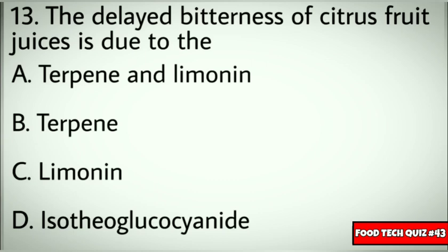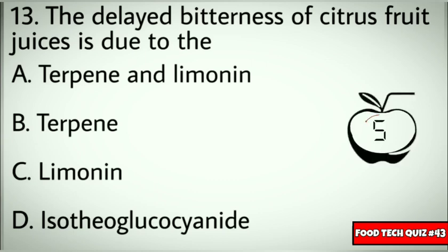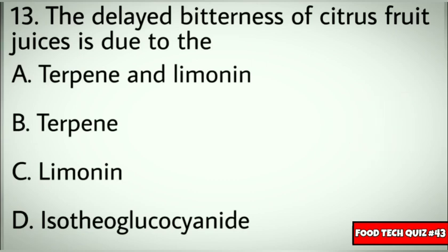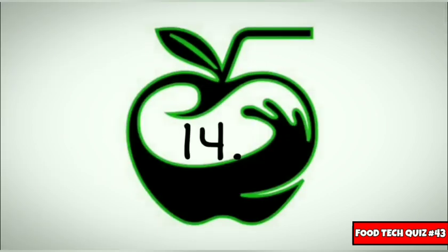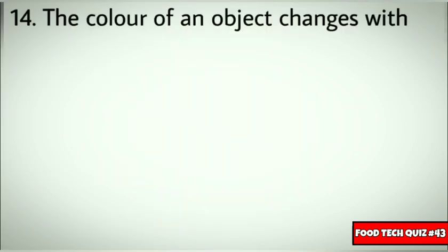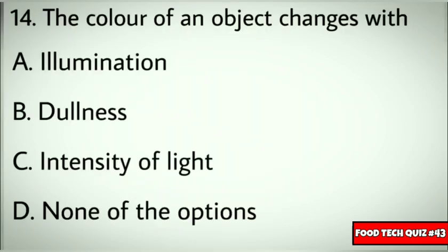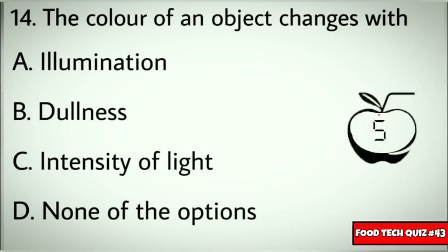Question number 13: The delayed bitterness of citrus fruit juice is due to? Options: A) Terpene and limonin, B) Terpene, C) Limonin, D) Isothioglucosinide. Correct answer: A) Terpene and limonin. Question number 14: The color of an object changes with? Options: A) Illumination, B) Dullness, C) Intensity of light, D) None of the options. Correct answer: A) Illumination.